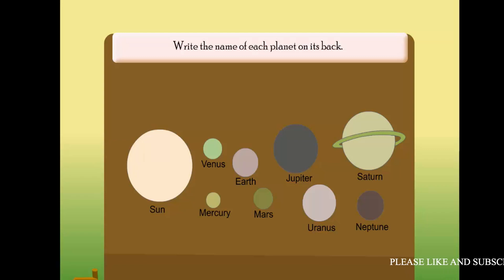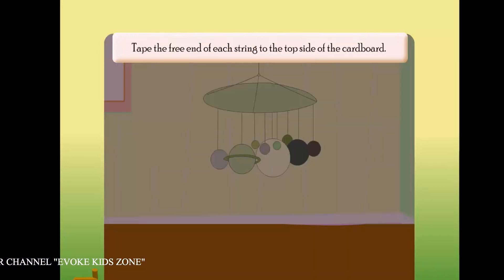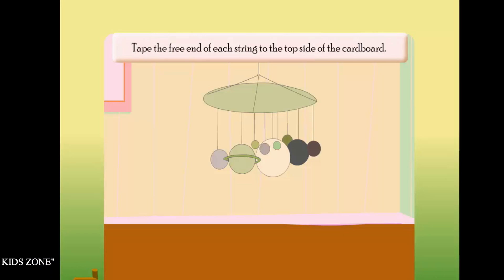Tape a length of string to each planet and the Sun. Lace the other end of each string through the correct hole in the cardboard. Tape the free end of each string to the top side of the cardboard.